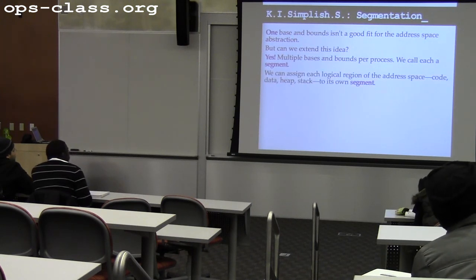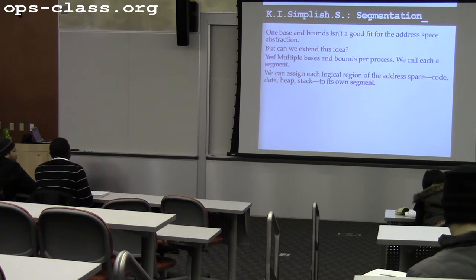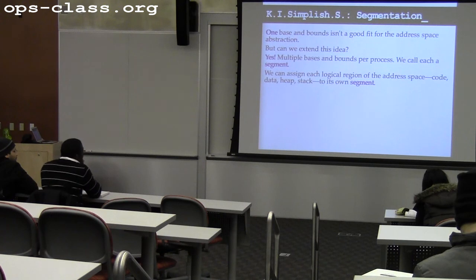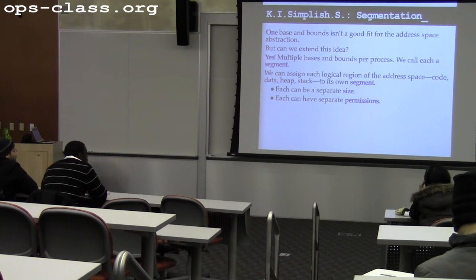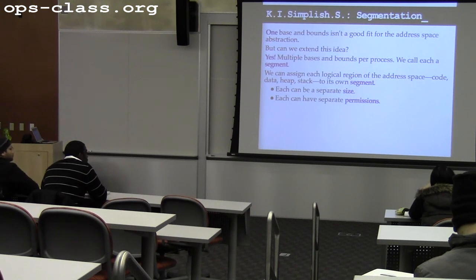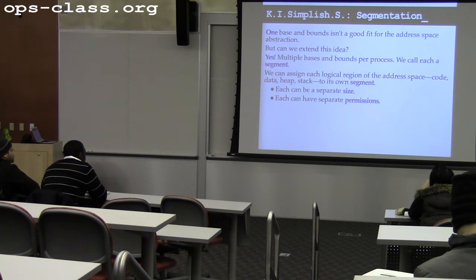Each segment can be a separate size, and each segment can be protected differently. When I looked at the pmap output for a process, some segments were marked as executable, some as read-only. So now I can assign each segment a portion of the address space with different permissions. How do I change the size of a segment with base and bounds? I just change the bound — if the process calls sbrk and wants a few more pages, I move the bound up in the MMU.